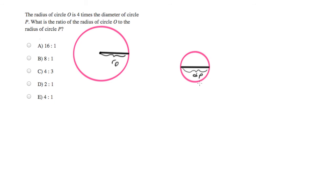All right, so that's radius of O and diameter of P. And we know radius of O is 4 times the size of the diameter of P.